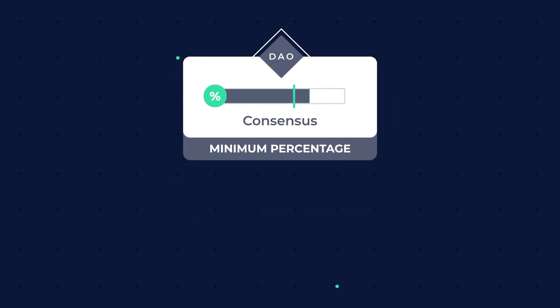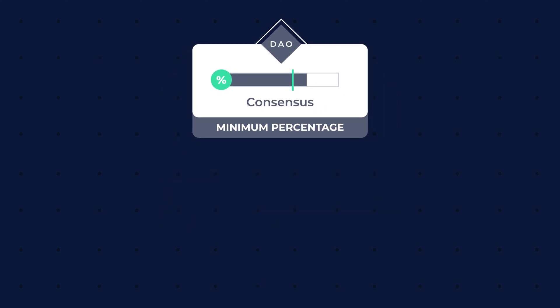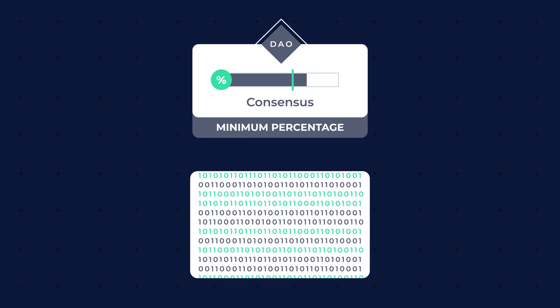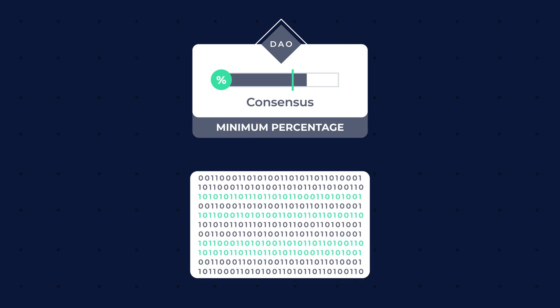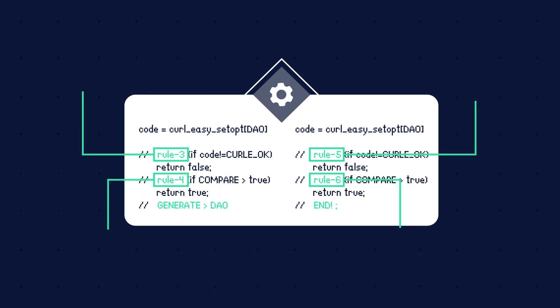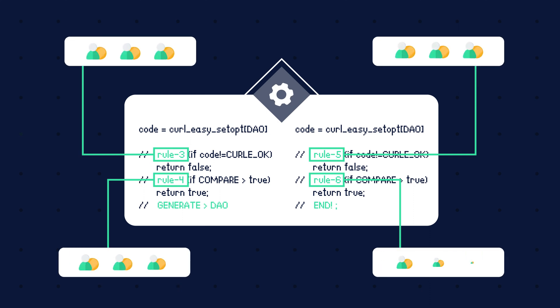As with every operational rule, the required percentage to reach consensus is stated in the code. Every aspect or rule that is recorded in the DAO as a smart contract can be changed via a proposal and democratically voted on by its stakeholders.